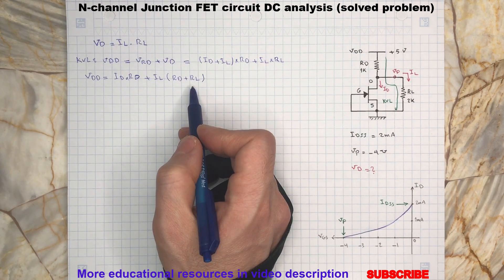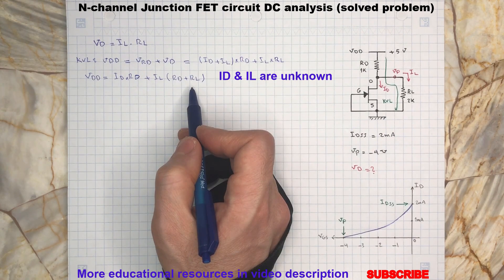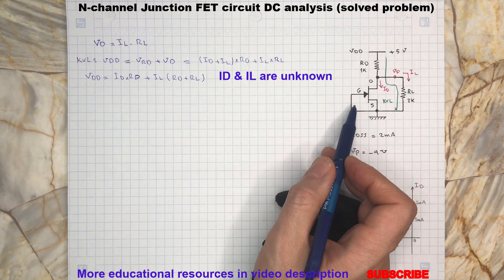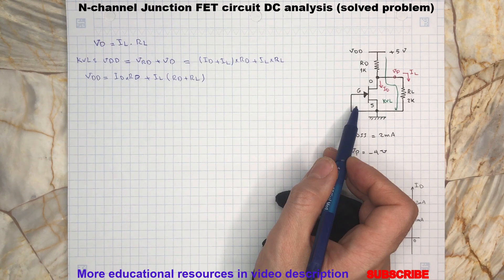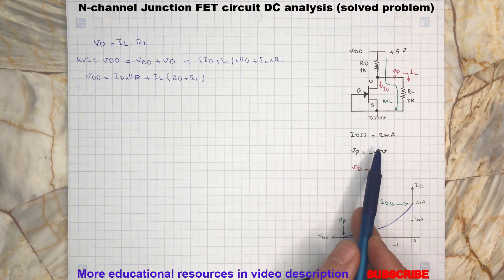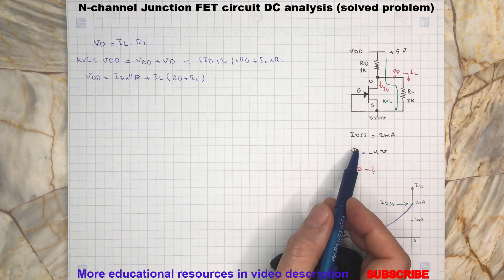This is an equation with two unknown parameters, but here's a trick: we know that if the gate and source are at the same potential level, which means VGS equals zero, then the junction FET will operate at its maximum drain-source current, which is IDSS. From electronic circuit analysis, we know that